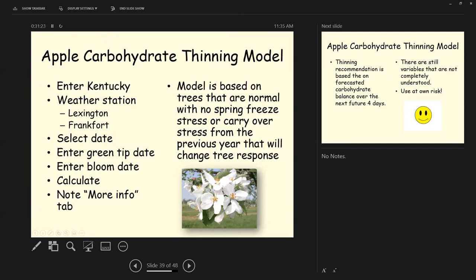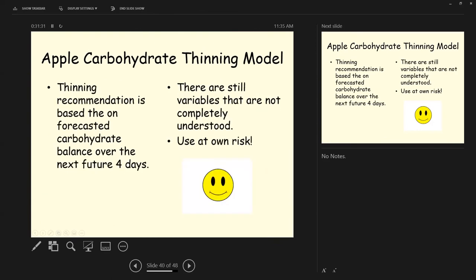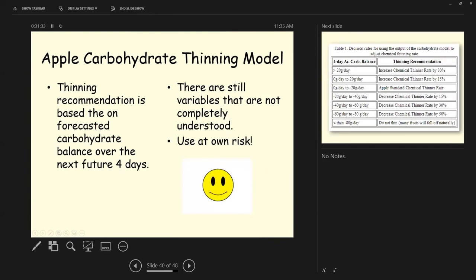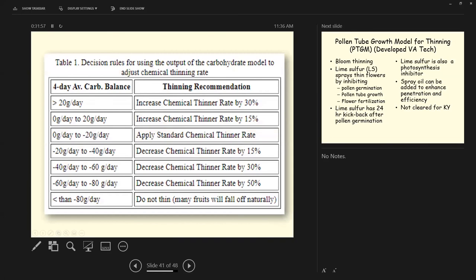Now this model is based on trees that are normal with no spring freeze stress or carryover stress from the previous year that will change this tree response. The thinning recommendation is based on the forecasted carbohydrate balance over the next future four days. So it's taking the weather forecast into account. Now the guys from Cornell say there are still variables that are not completely understood. So you need to use this at your own risk. After you push that calculate button on the model, you'll get a chart back like this.